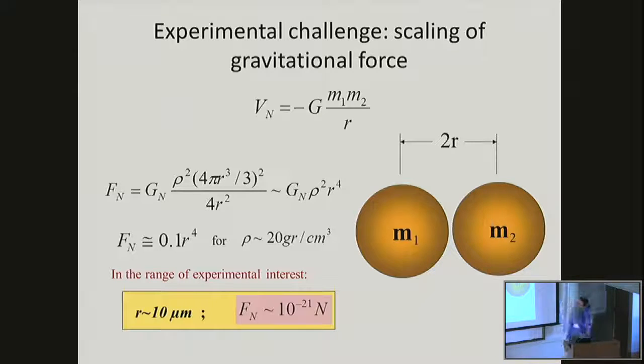The reason lab experiments are hard here is if we look at how the gravitational force scales if I have two objects. If I have two spheres and bring them together as close as possible at twice the radius separation, the Newtonian force between the spheres scales like the positive fourth power of the size of the object. If I plug in densities for as dense objects as I can find on Earth, the Newtonian force at a length scale of around 10 microns gets to be an enormously small number, 10^-21 Newtons, or at the zepto-Newton level.